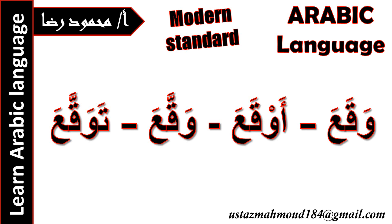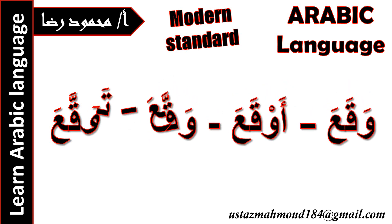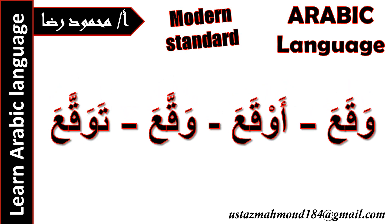Today we have four verbs. They come from just one root: waw-qaf-ain. The first verb is waqaa and awqaa, waqaa and tawaqqa'a — four verbs from just one root.